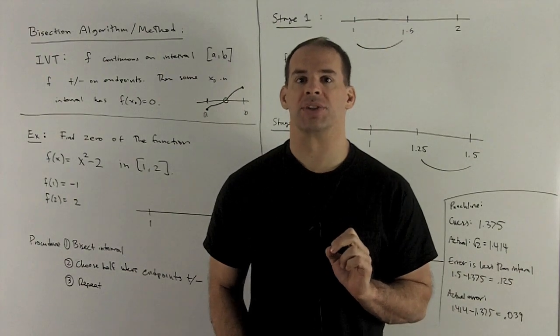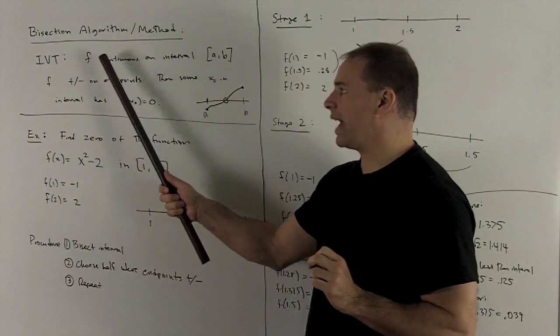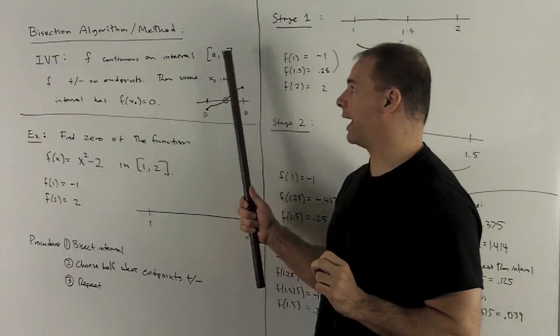Let's recall what the Intermediate Value Theorem says. We have a function f continuous on a closed interval a, b.